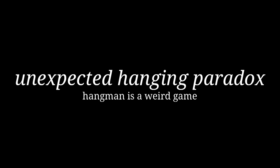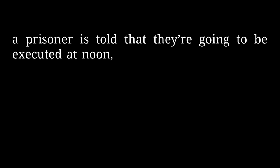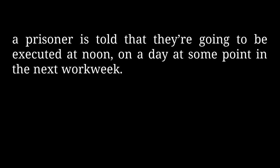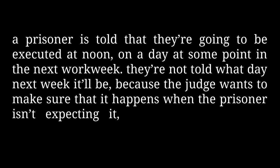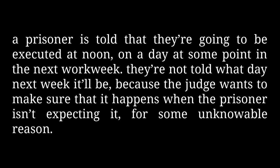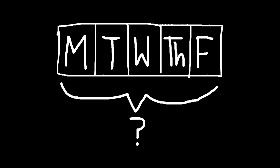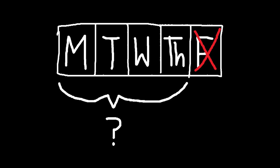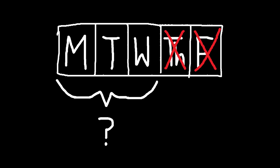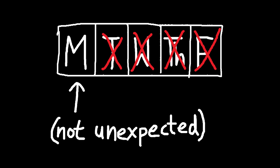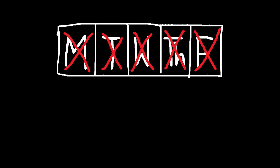One more contradiction before moving on — one of my favorites. A prisoner is told they're going to be executed at noon on some day in the next workweek, but the judge wants it to happen unexpectedly. The prisoner reasons that they won't be hanged on Friday, because if they make it past Thursday noon unhanged, they'd know exactly when it's happening — so it wouldn't be unexpected. By the same reasoning they can rule out Thursday, then Wednesday, Tuesday, and Monday, concluding the hanging can't happen at all. So when they're hanged on Wednesday, it's completely unexpected.